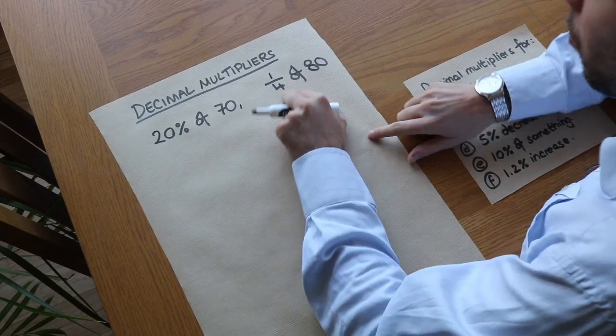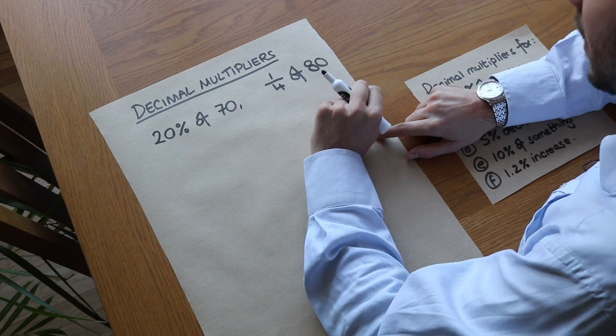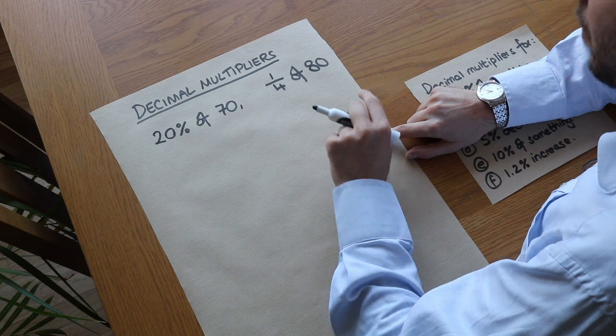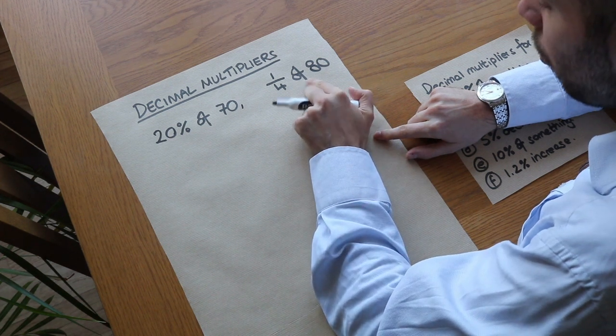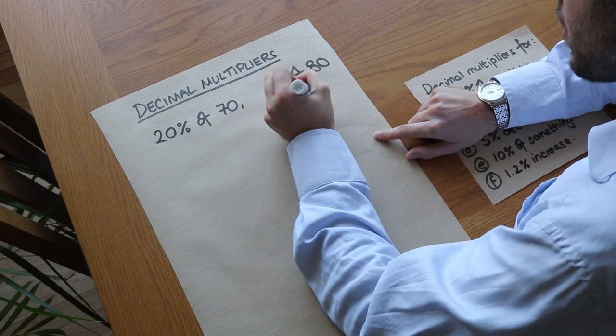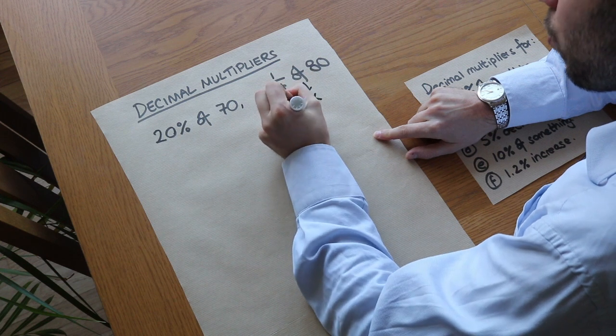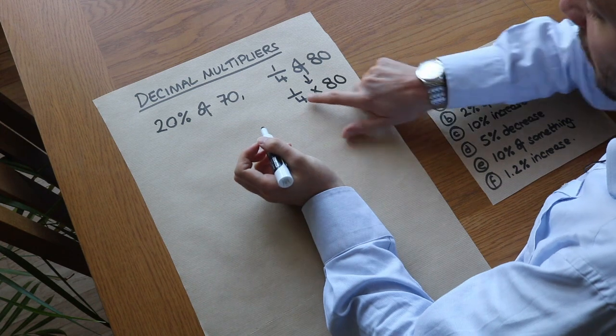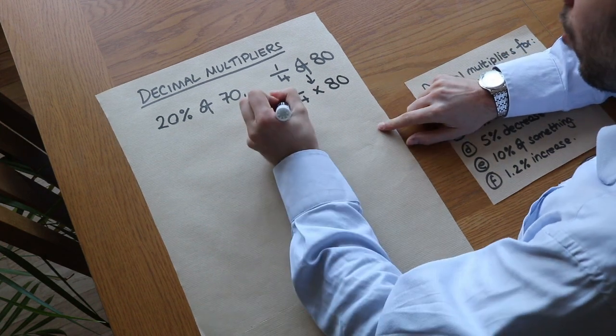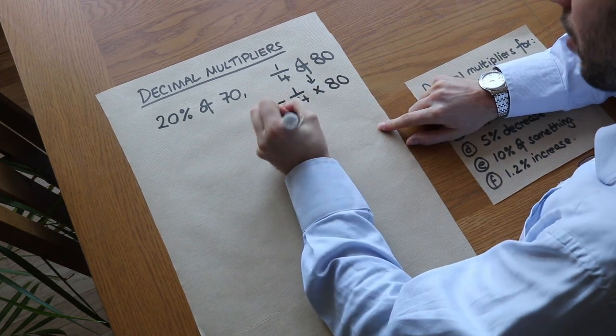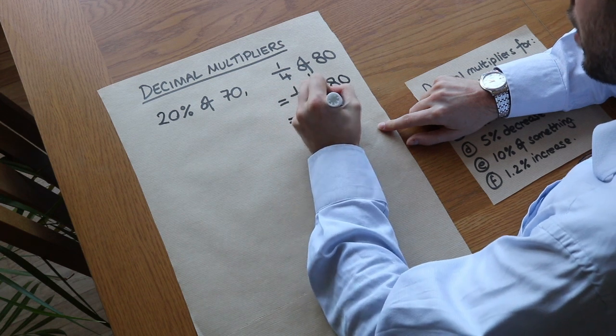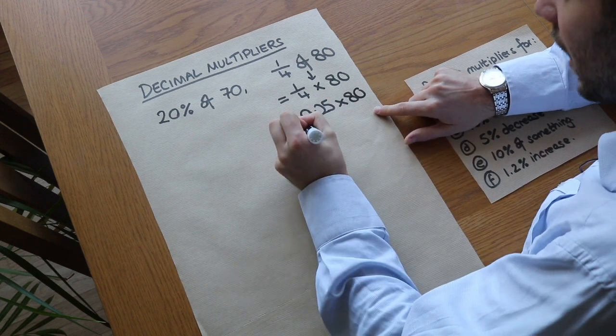Let's say we wanted a quarter of 80. There are two ways to do it - you could just do 80 divided by 4, but another way is we could replace the word 'of' with 'times', so we're then doing a quarter times 80, which would be 20. Or we could write that as a decimal: 0.25 times 80, which still gives us 20.